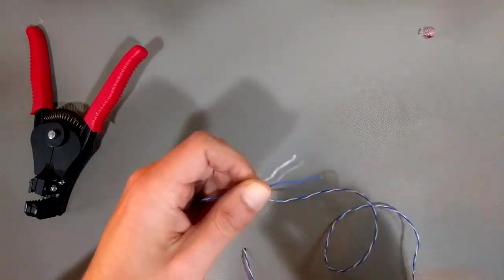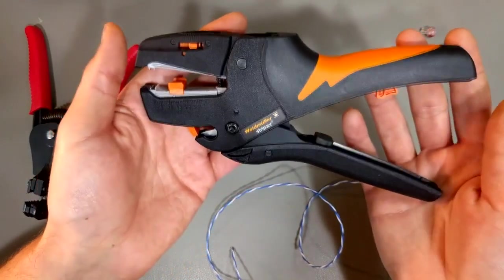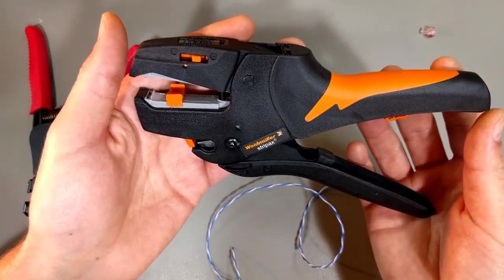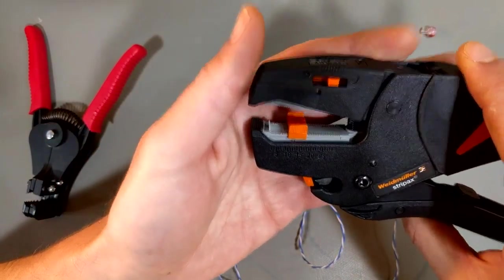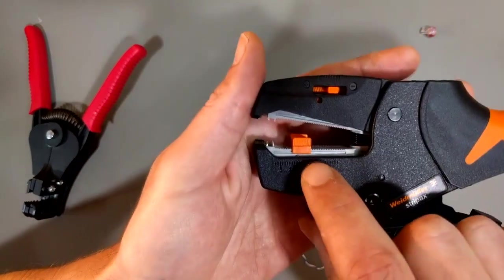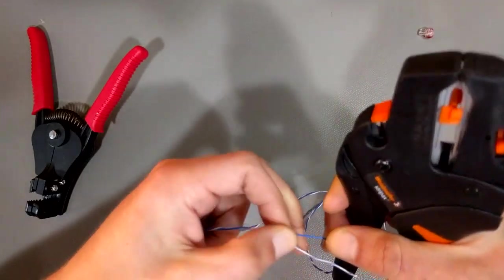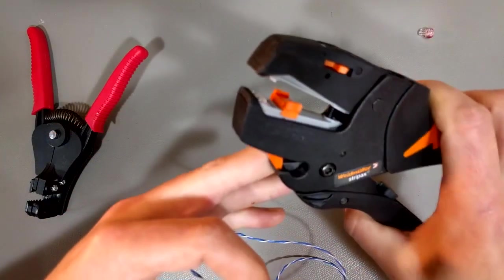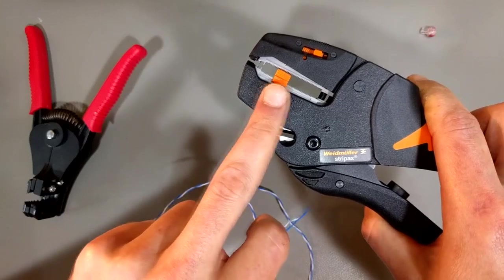Well actually for that my preferred tool is this guy. This is a Wiedmühle Stripaxx. Again here, this one works a little bit differently. It has this little guy here. Let me demonstrate this first. It's got these funky teeth, these little blades on here, and then it's got this little thing that slides back and forth.